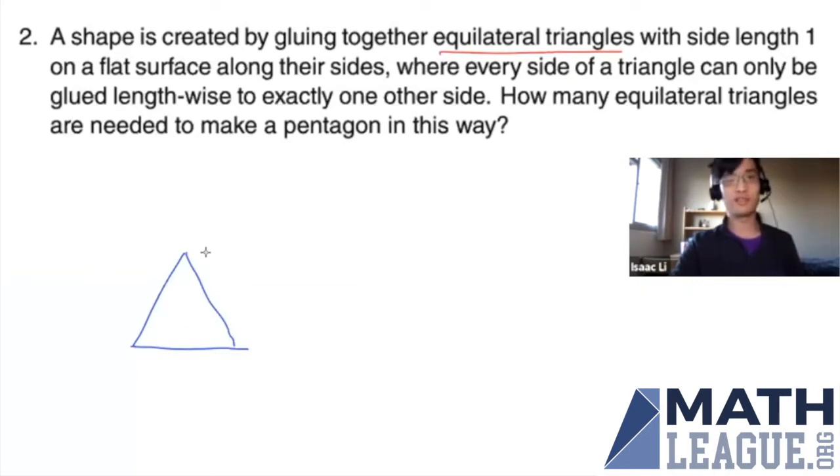To create a larger shape with supposedly more edges, we can glue a second triangle like this. According to the rules, they must be glued along this edge exactly. And this is the only other shape that we can make with two triangles. It's this rhombus looking thing with four sides. That isn't enough sides.